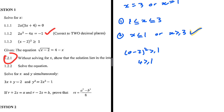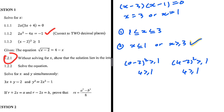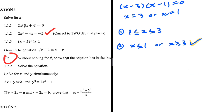Without even testing the second option we already know it is correct, but let's verify for clarity. For x less than 1, take x equals 0: zero minus 2 squared is 4, which is greater than or equal to 1 — satisfied. For x greater than 3, take x equals 4: 4 minus 2 squared is 4, greater than or equal to 1 — satisfied. So x is less than 1 or x is greater than or equal to 3.